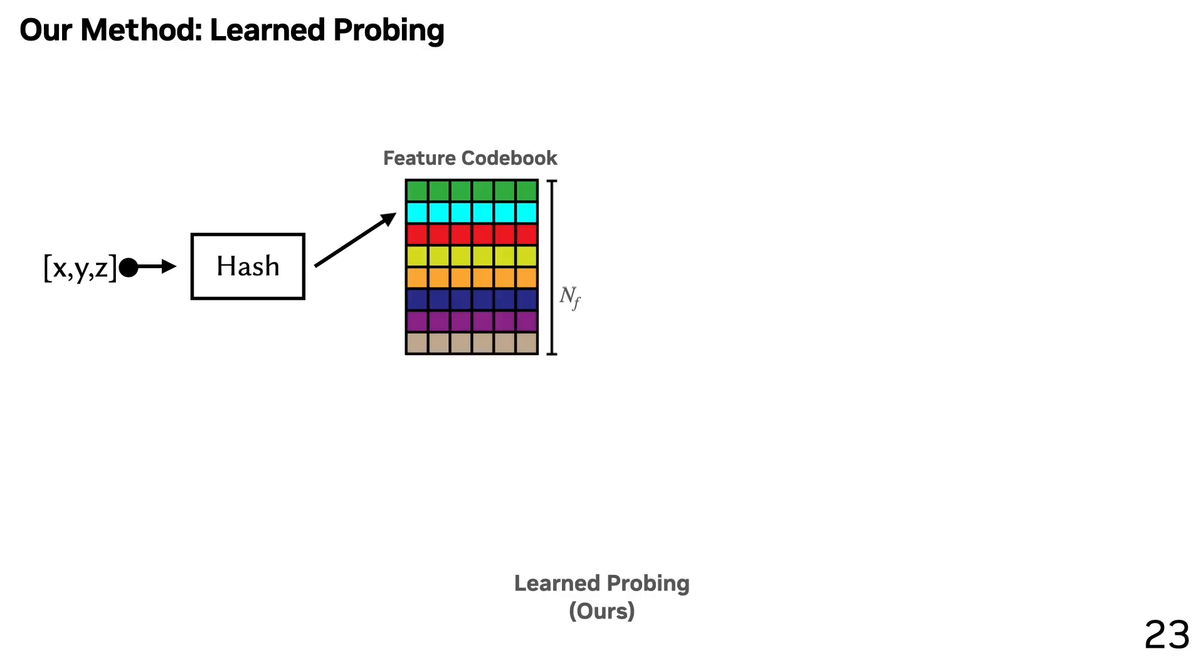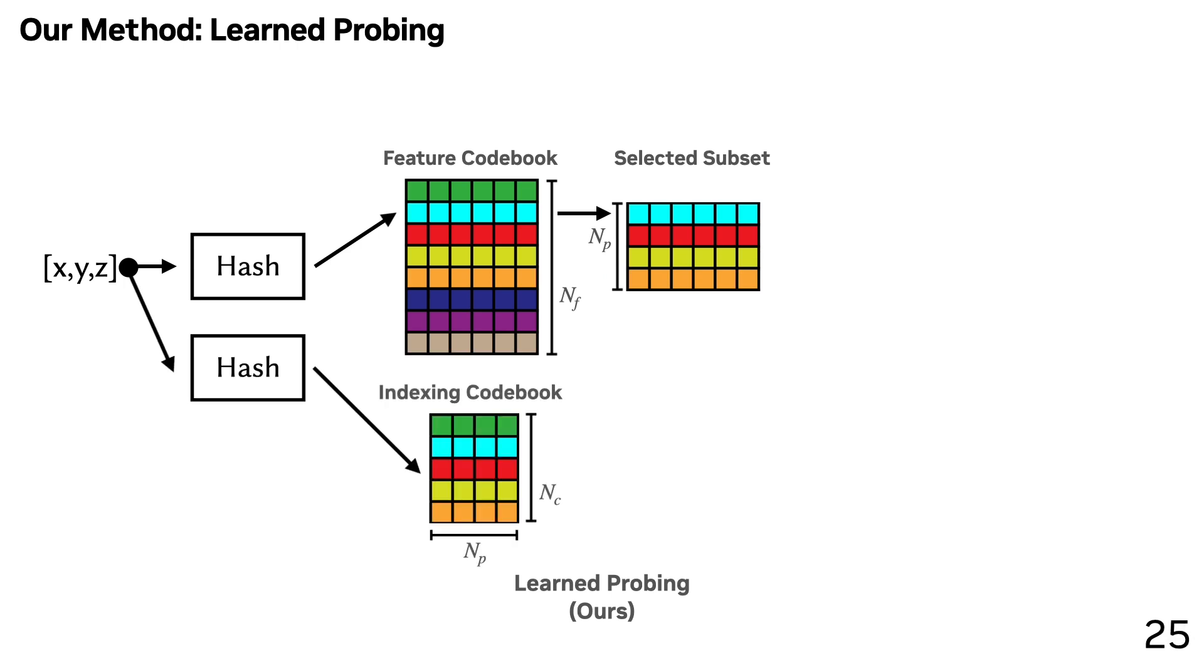First, we start from a usual hash grid algorithm where XYZ maps to some index. Then, instead of selecting a single vector using that index like we do in Instant NGP, we select a subset of size N_p, which we call the probing range. We then need a mechanism to select a single vector from this probing range. To do this, we use index learning. We use another hash function to index into an indexing codebook which has a bunch of softmax vectors stored in it. Then we can extract a softmax vector, do straight-through estimation, and use this as a differentiable index mechanism to get a single feature out of this.